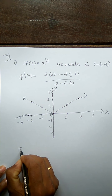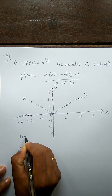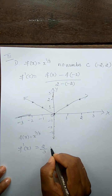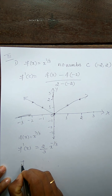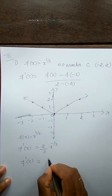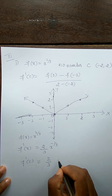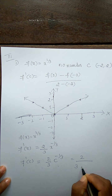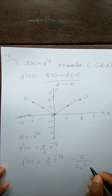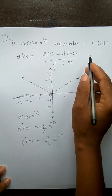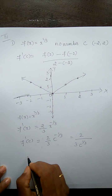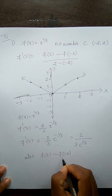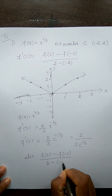Now, what is f'(x)? Given f(x) = x^(2/3), f'(x) = (2/3) · x^(-1/3). We need f'(c). So f'(c) = (2/3) · c^(-1/3), or equivalently 2 / (3 · c^(1/3)). Now they say f'(c) should equal [f(2) - f(-2)] / [2 - (-2)].